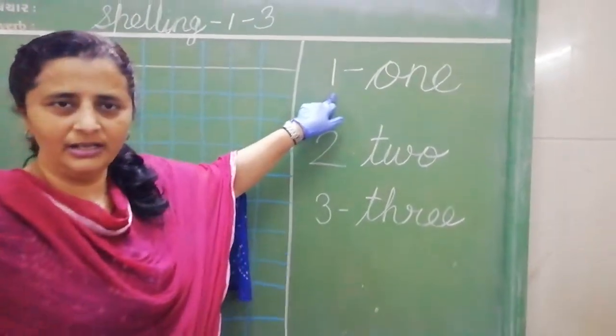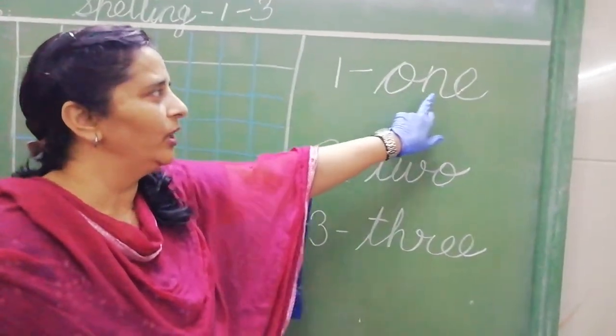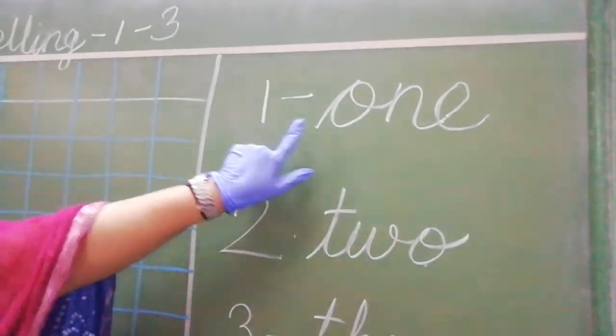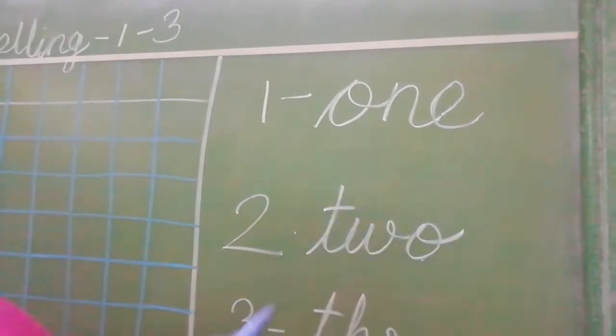This is number 1. Spelling of 1 is o-n-e, 1. Spelling of 1 is o-n-e, 1.